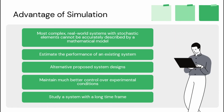Simulation has its advantages and disadvantages. Number one of the advantages: most complex real-world systems with stochastic elements cannot be accurately described by a mathematical model — a simulation is often the only type of investigation possible. Number two, it can estimate the performance of an existing system. Number three, it gives alternative proposed system designs.